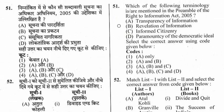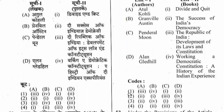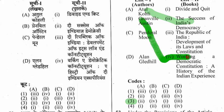Question 52: Match authors with books. The right option is option 3. Atul Kohli wrote 'The Success of Indian Democracy.' Granville Austin wrote 'Working a Democratic Constitution: A History of the Indian Experience.' Penderel Moon wrote 'Divide and Quit.' Alan Gledhill wrote 'The Republic of India: The Development of Its Laws and Constitution.'